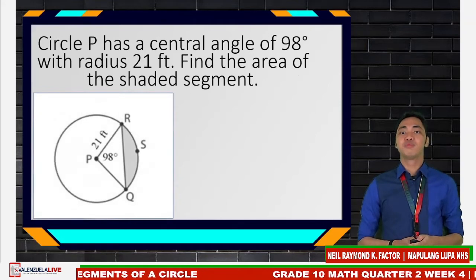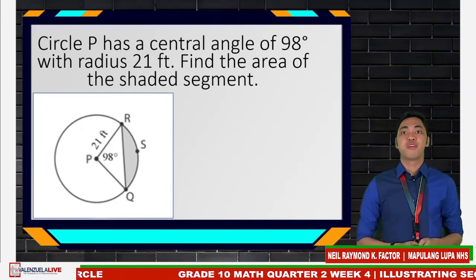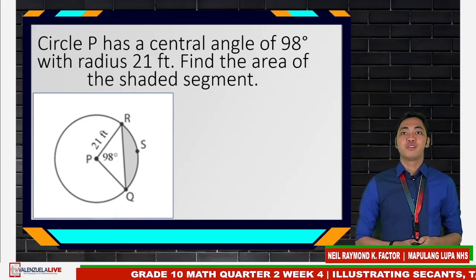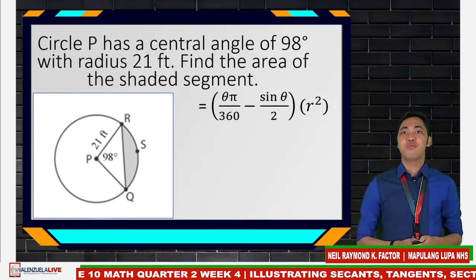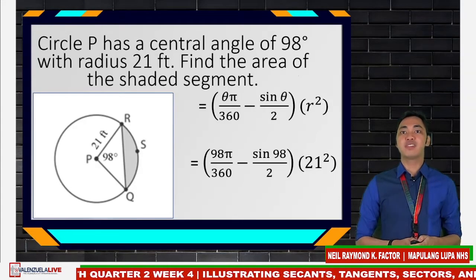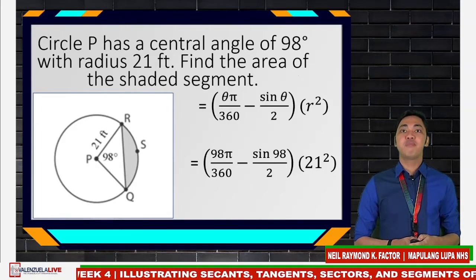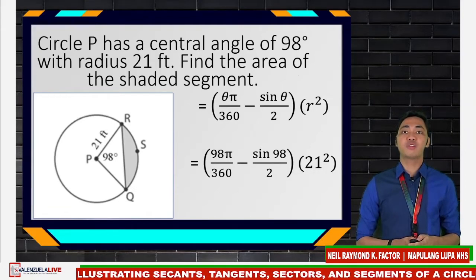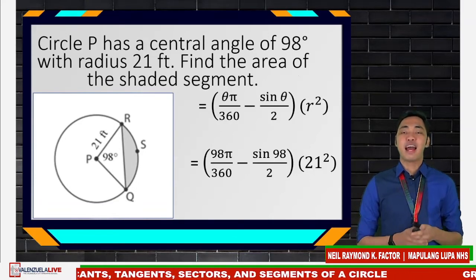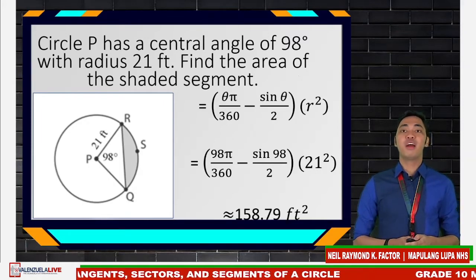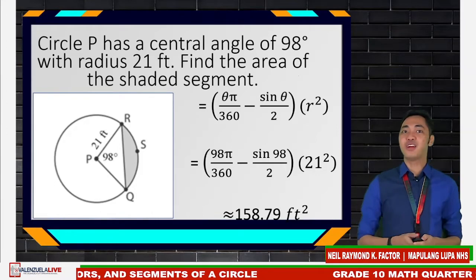Let's have an example. Circle P has a central angle of 98 degrees with radius 21 feet. Find the area of the shaded segment. Our theta is in degrees, so we use that formula. Substituting theta = 98 degrees and radius = 21 feet: 98 pi over 360 minus sine 98, all over 2, times 21 squared. Make sure your calculator is set to degree mode. The value is approximately 158.79 square feet.